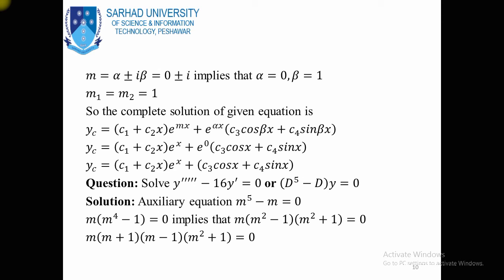We can write one solution for case number 3 (roots are complex and different) and the other part for case number 2 (two real and repeated roots). So case number 2 and case number 3 are now combined for the complementary solution of the given fourth order linear homogeneous differential equation. There are two complex roots (0 ± iota) and two real repeated roots.